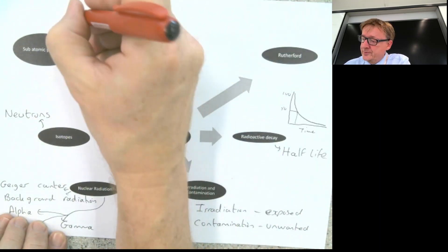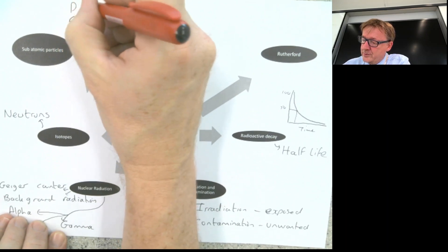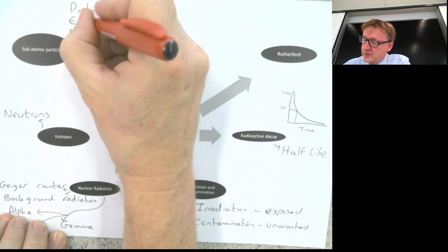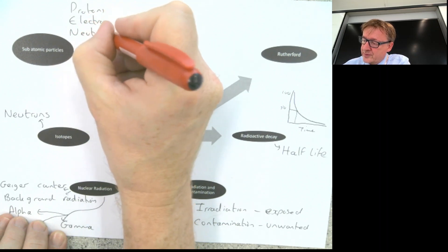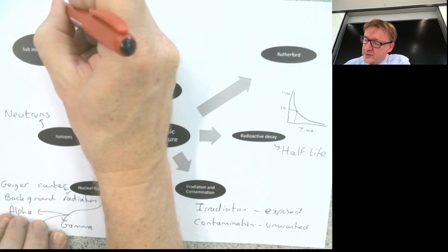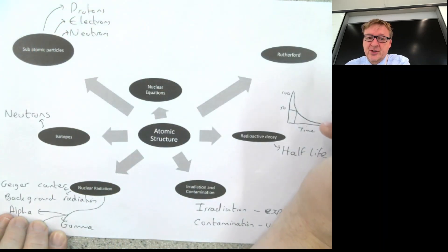Subatomic particles. Protons, electrons, neutrons. And again, even though it comes up in other units, you need to know details about the masses of them, the charges of them.